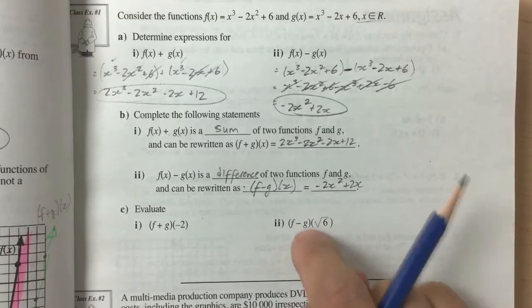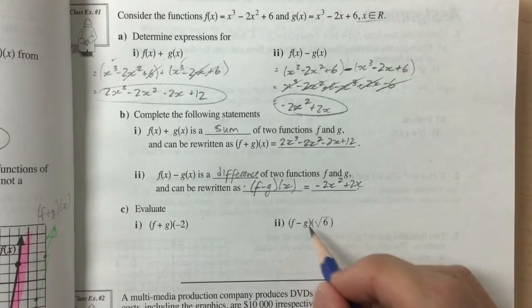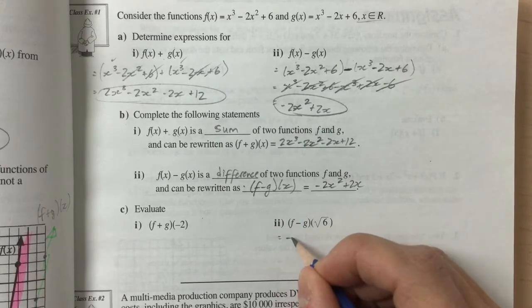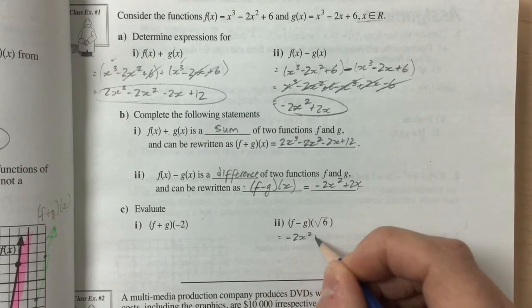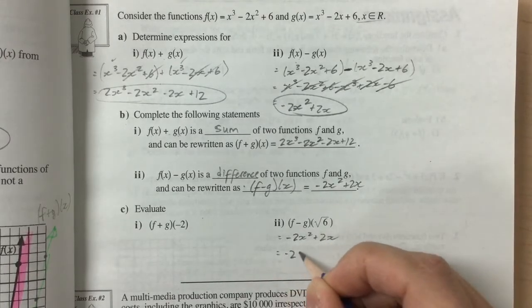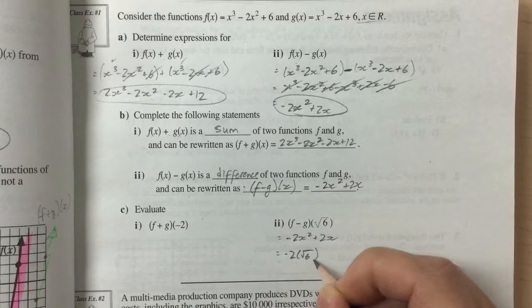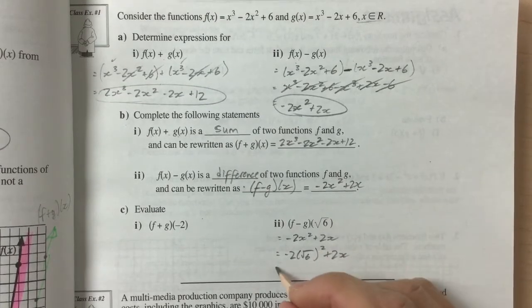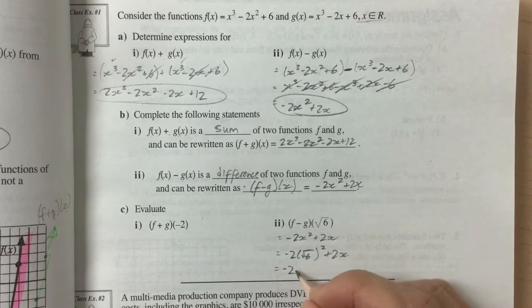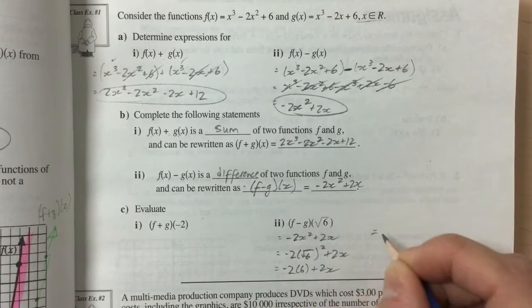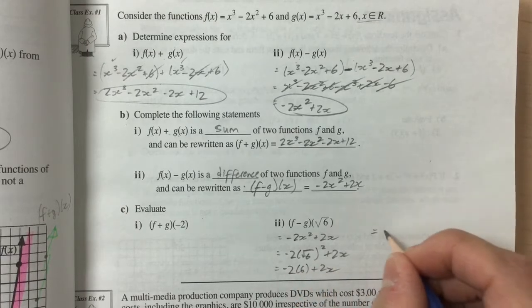Let's look at this one down here. f minus g of the square root of 6. And so our function f minus g is negative 2x squared plus 2x. And so if we replace our x value with the square root of 6, this is what we're left with. And negative 2 square root of 6 squared is just 6. And so negative 2 times 6 is negative 12.